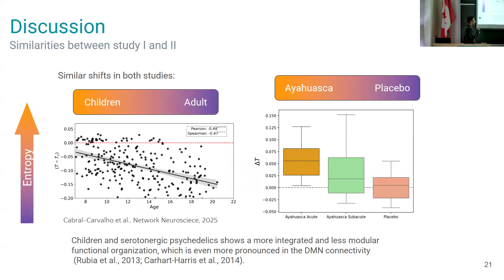Just to conclude, here there is another study that was published this year that we verified over neurodevelopment what happens to this idea of brain criticality. What we see is that over neurodevelopment the temperature decreases. We also see in the psychedelics, which is very interesting, that the temperature also decreases when you go from acute to placebo.